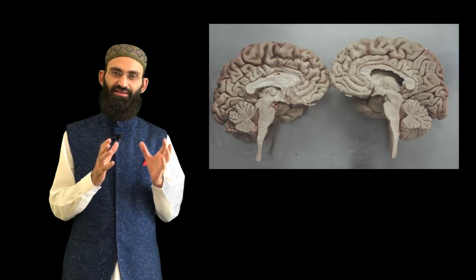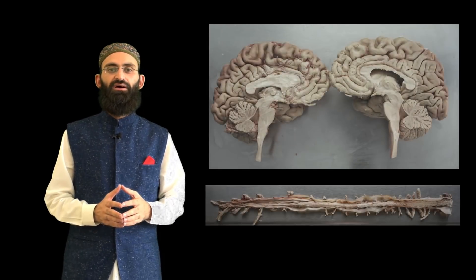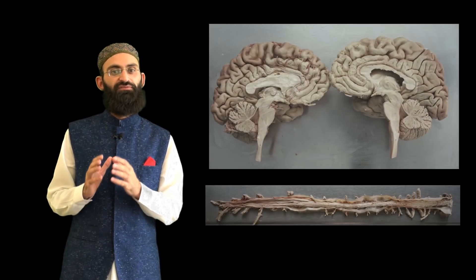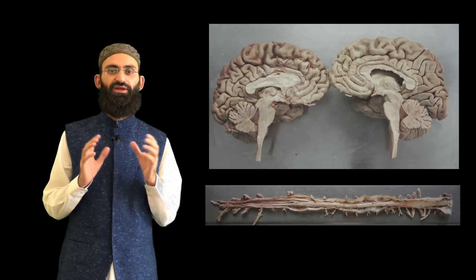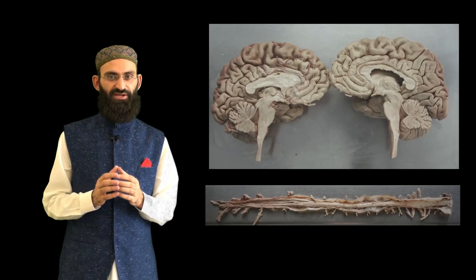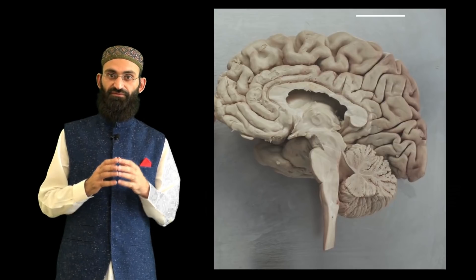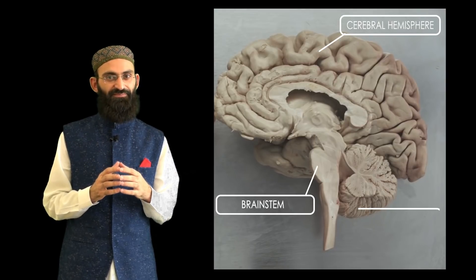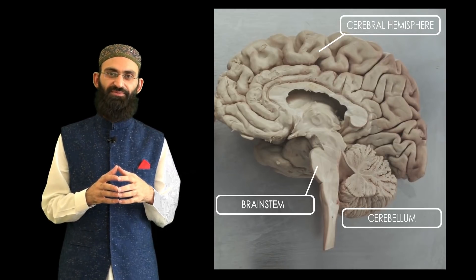The nervous system is divided into the central and peripheral nervous system. The central nervous system comprises the brain and spinal cord, while the peripheral nervous system consists of cranial and spinal nerves. The brain consists of cerebral hemispheres, brainstem, and cerebellum.